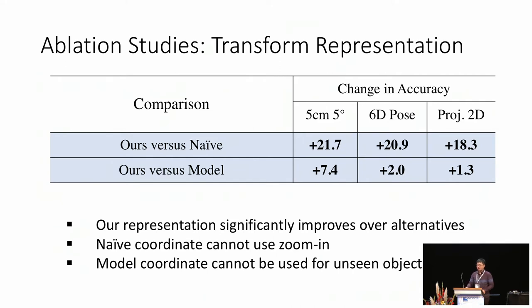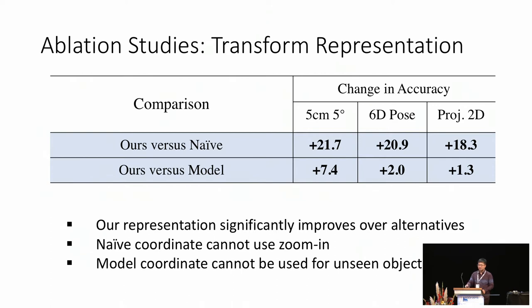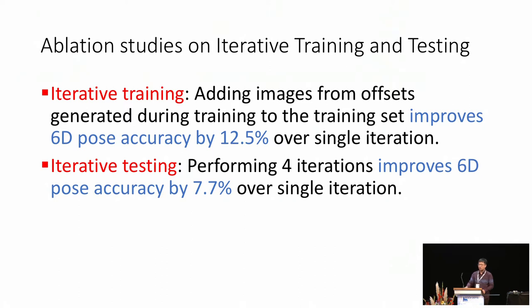Then we did the comparison between the naive coordinate, model coordinate, and our coordinate. From the table, we can see that our coordinate has significant advantage over the other two candidates. The ablation study on techniques about iterative training and testing proves that they are very helpful. Iterative training and testing improves the accuracy by 12.5% and 7.7% respectively over one single iteration.